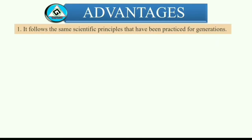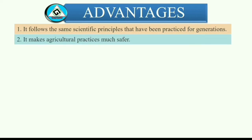Advantages of genetic engineering: It follows the same scientific principles that have been practiced for generations. Humans have been manipulating plant and animal life since the beginning of our history. Genetic engineering just increases the speed at which this progress can occur. It makes agricultural practices much safer. Before genetic engineering, farmers would often use heavy amounts of herbicides or pesticides to maximize their yields. With modern scientific practices, we can reduce, if not eliminate, the need for anything to be applied to crops. That makes the work safer, creates healthier soils, and reduces the risks of groundwater contamination all at the same time. It creates greater yields.